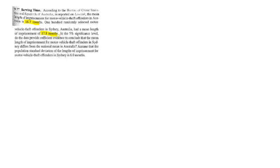The first thing I'm going to do is locate all the information I'm going to need. We have 16.7 months — that's our mu. The mean length in Sydney of 17.8 is our X-bar. We have 100 randomly chosen people — that is our n. We are using a 5% significance level, and the known standard deviation is 6 months, so we know sigma.